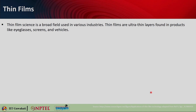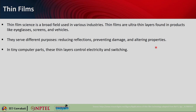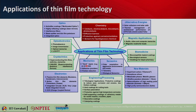The same foundry with some minor modification can help fabricate nanophotonic or plasmonic structures. If we are going for totally different materials, that might be difficult for mass production at the current stage when the foundry is not supporting those kinds of material fabrication. Thin film science is a broad field used in various industries. Thin films are ultra-thin layers that can be found in products such as eyeglasses, screens and vehicles, serving different purposes like reducing reflection, preventing damage and altering properties. In tiny computer parts, thin films can control electricity and help you switch. An important application is the gate dielectric in transistors, which is often less than 10 nanometers thick.